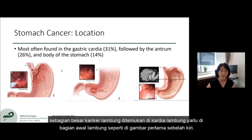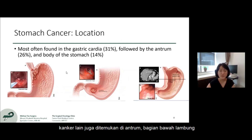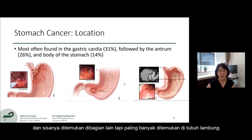Stomach cancers are mostly found in a few locations. About a third of them are found in the gastric cardia, which is the first part of the stomach, as seen in the picture on the left. Another third are found in the antrum or the lower part of the stomach, and the rest are found in different parts of the stomach, with the highest number being in the body of the stomach.